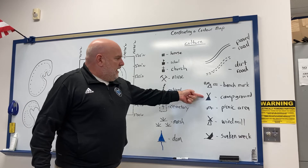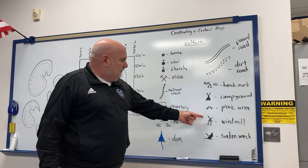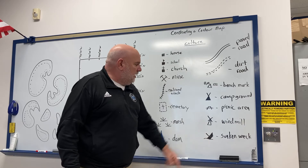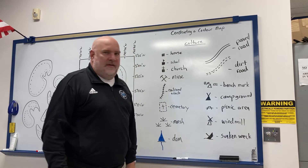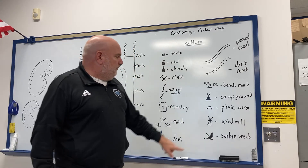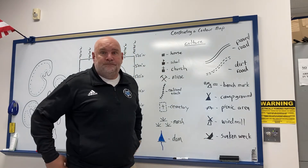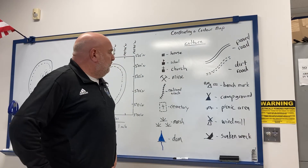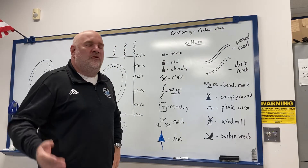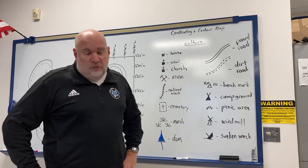Other symbols include a campground, a picnic area, a windmill, and a sunken wreck — which you'd find in the water so ships know to avoid it. Those are some examples of culture; there are many more symbols than that.